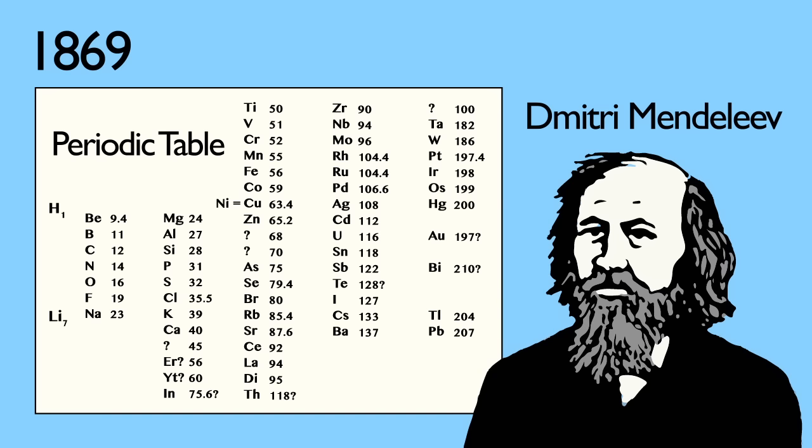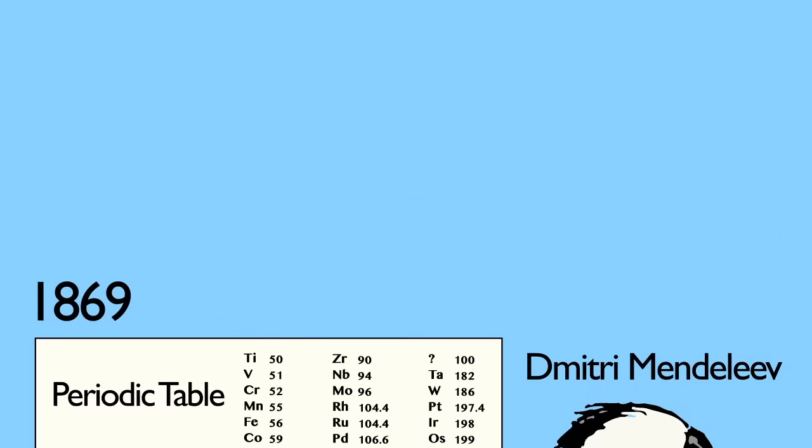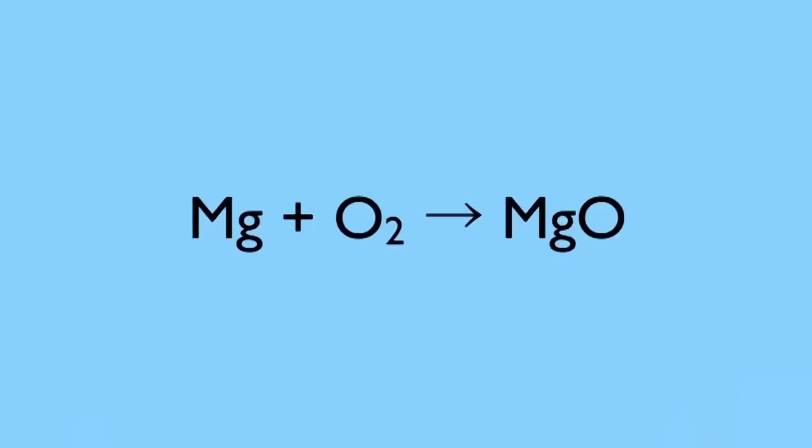For example, the burning of magnesium. This needs balancing. When we balance an equation, we are simply obeying the law of conservation of mass. All the atoms in the reactants must be accounted for in the products.